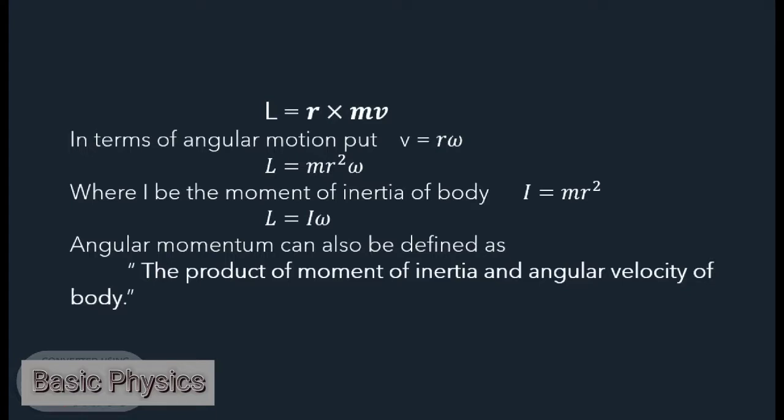For angular motion, put v equal to r omega. So L equals m r squared omega. I is the moment of inertia of the body, which equals m r squared. Therefore, angular momentum equals I omega.